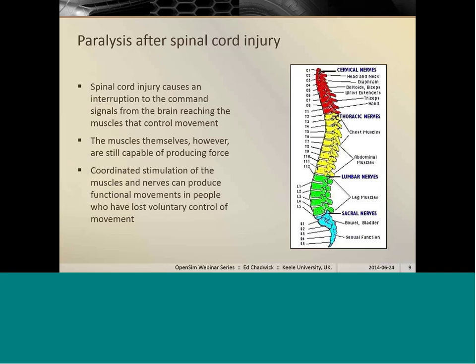So first of all, I'd just like to say a few words about the problem that we're talking about. Paralysis after spinal cord injury. In spinal cord injury there's an interruption to the command signals from the brain reaching the muscles that control movement. And the muscles themselves may still well be able to produce force, the ones below the level of the injury, but they're not getting the signal from the brain to contract in a coordinated way to produce movement anymore.